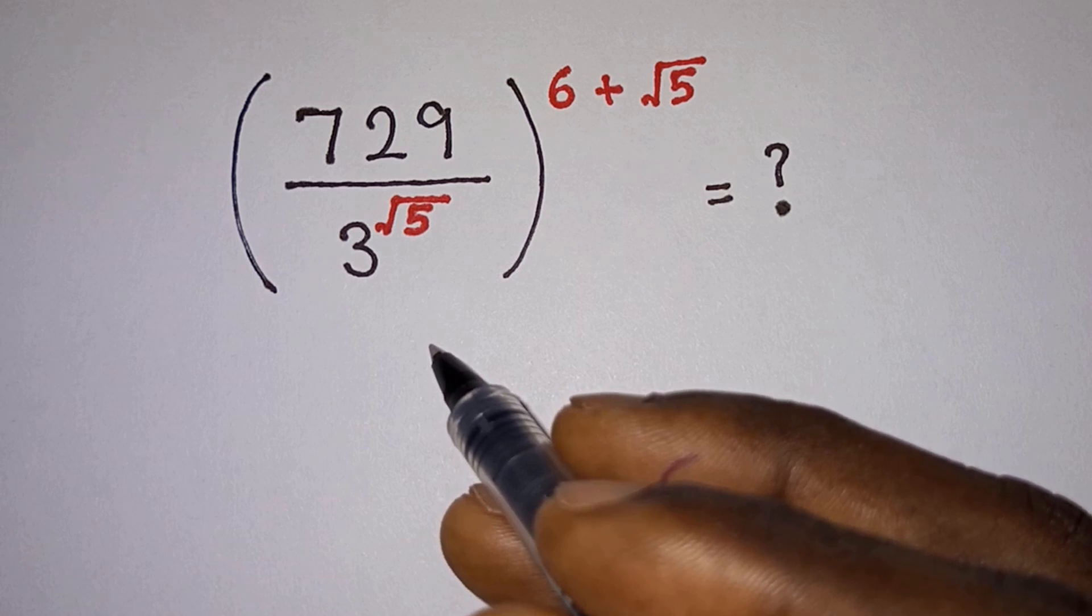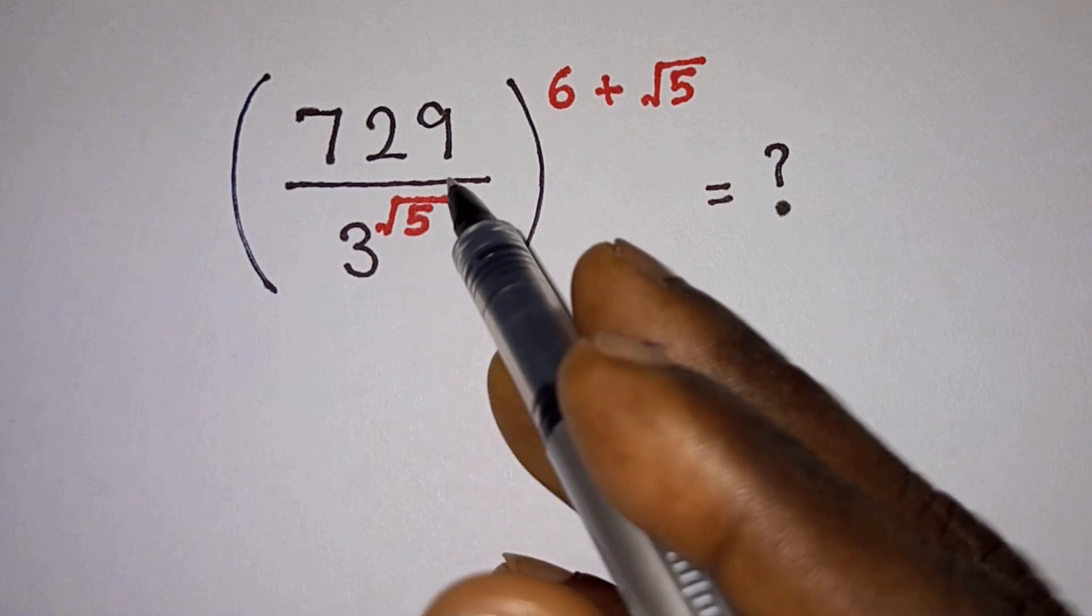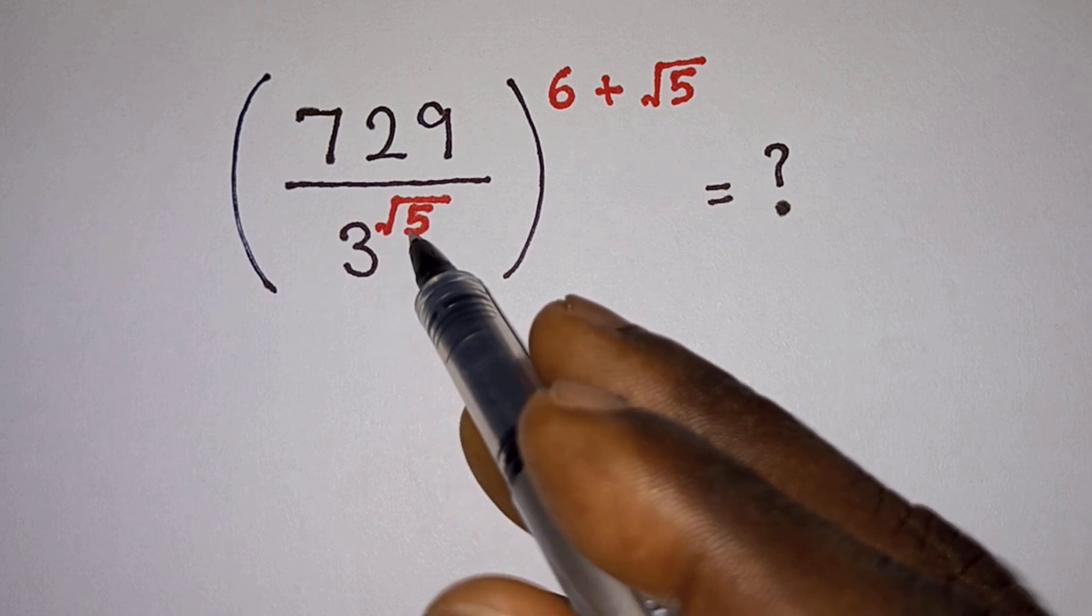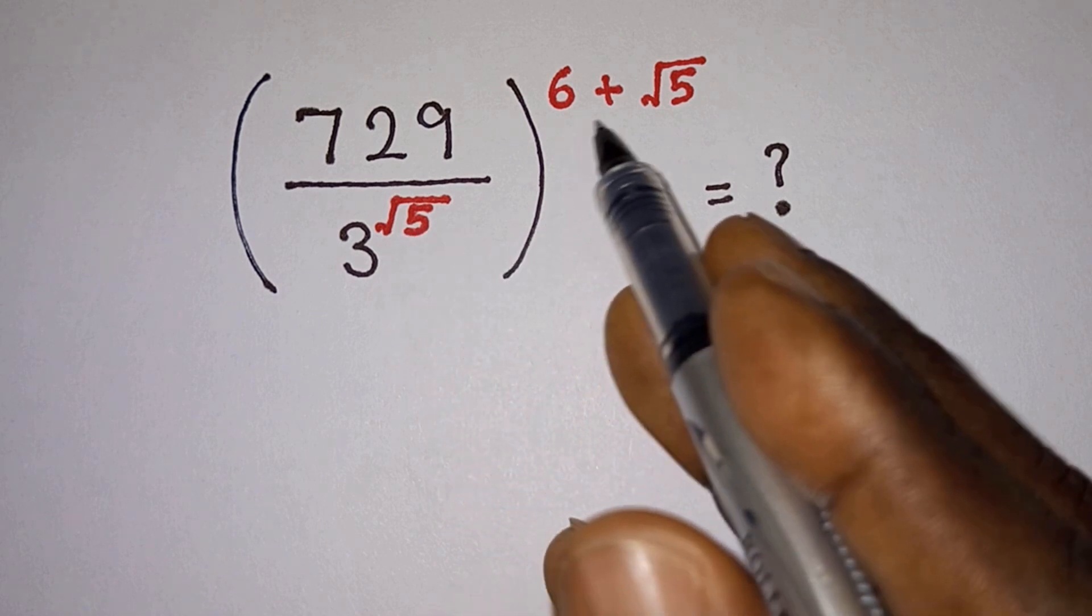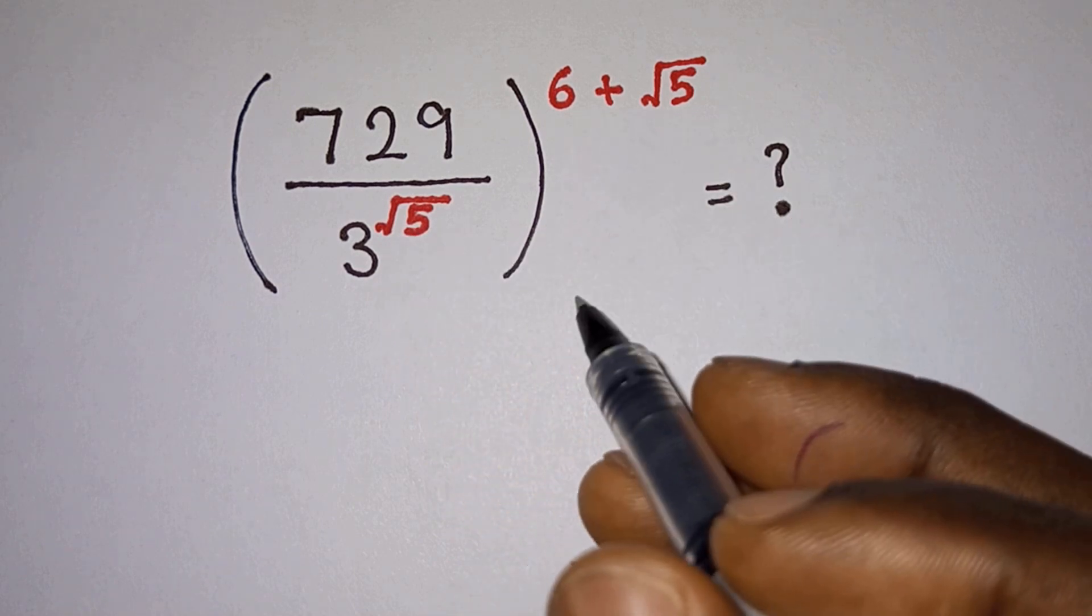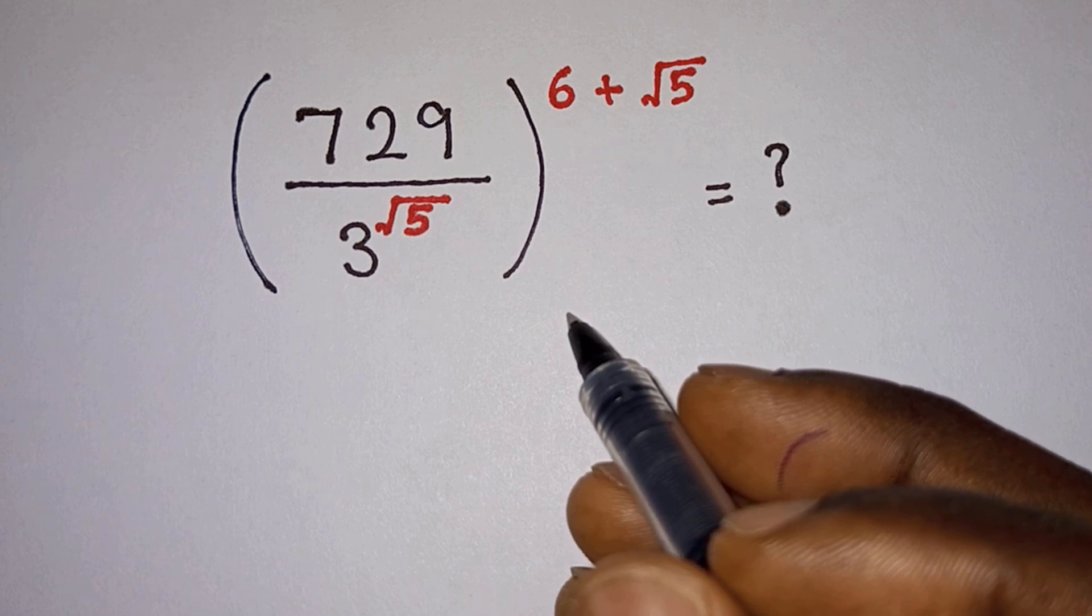Hello everyone. Without using the calculator, what is the value of 729 divided by 3 to the power root 5, or to the power 6 plus root 5? Before we begin, if you're new here, please subscribe.